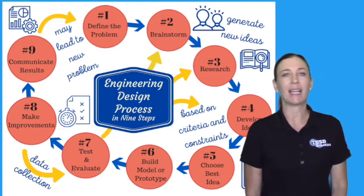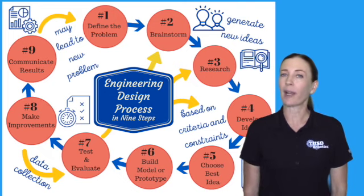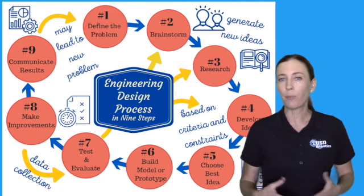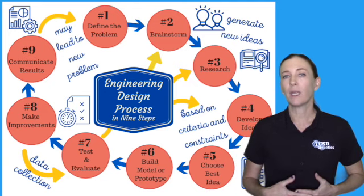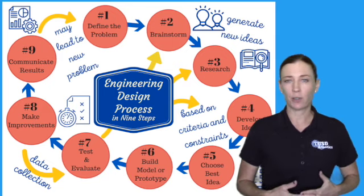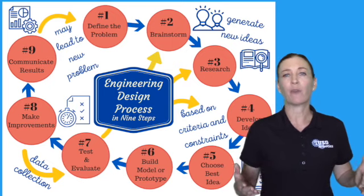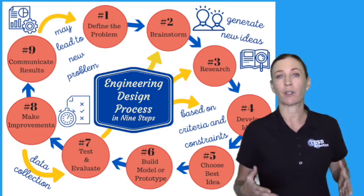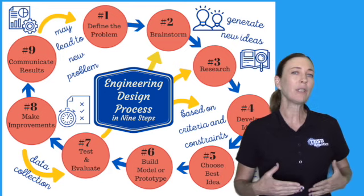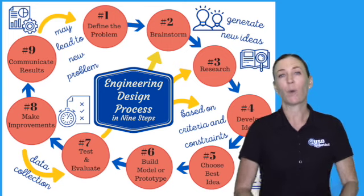The next thing I want to talk about is the engineering design process. The engineering design process is a series of steps that helps engineers solve pretty complicated problems. It helps provide an approach to a problem and gives you some structure for how you go about solving it. You will find many different versions of the engineering design process online — it might have a six-step or a twelve-step approach — but in TUSD, we have found that the following nine-step approach has been very beneficial with notebooking.